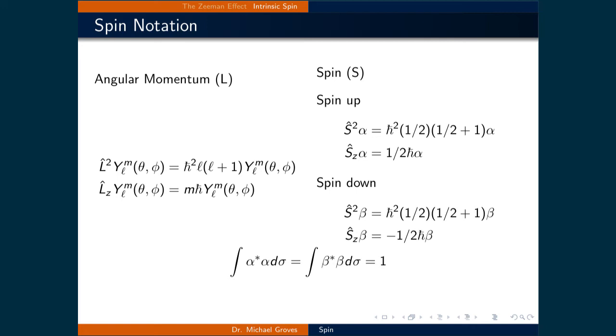Analogous to angular momentum, the value of spin is one-half, while the Z-component can only be plus or minus one-half. We will let alpha represent a state where the electron is in the spin-up configuration. So applying S-squared to alpha returns h-bar-squared times one-half times one-half plus one times alpha. The Z-component of spin applied to alpha returns one-half h-bar times alpha.